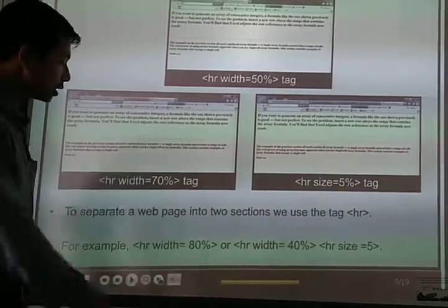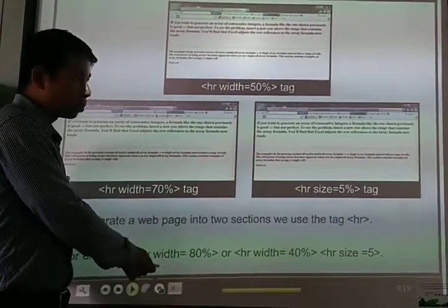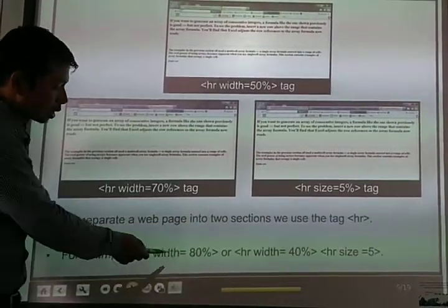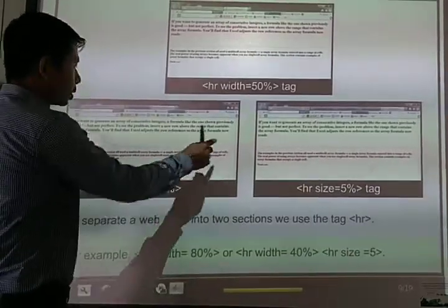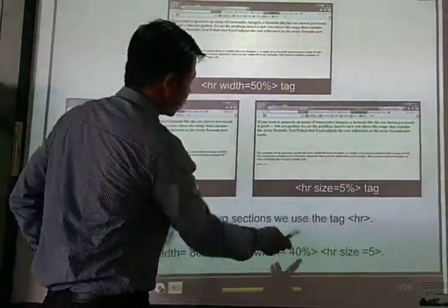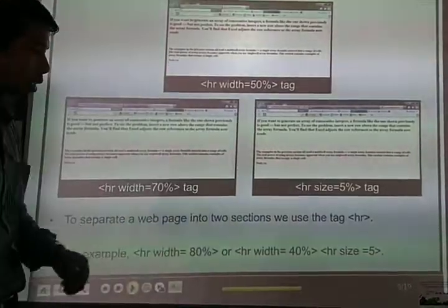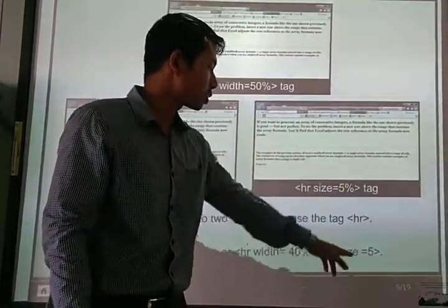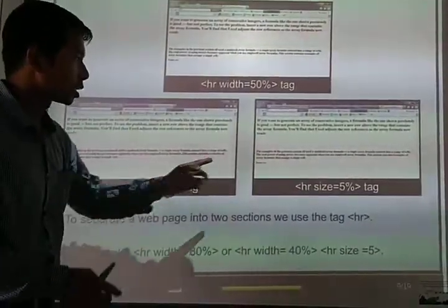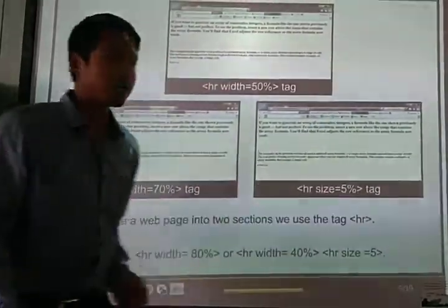These are the different attributes of this HR tag. HR width equals 80% means 80% of the whole webpage. Or HR width equals 40% means 40% of the whole webpage. Or HR size equals 5. Size means what is the size of this line.